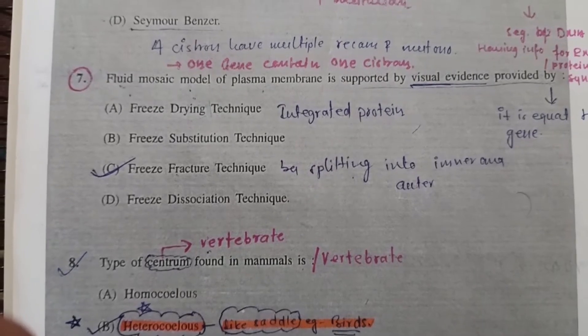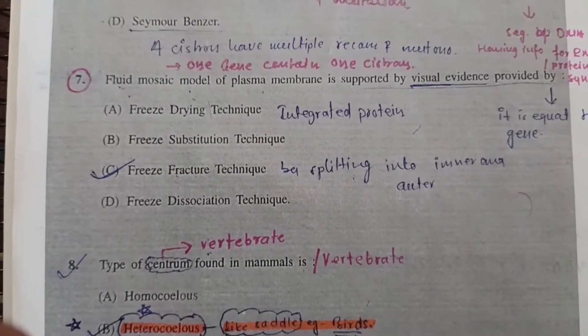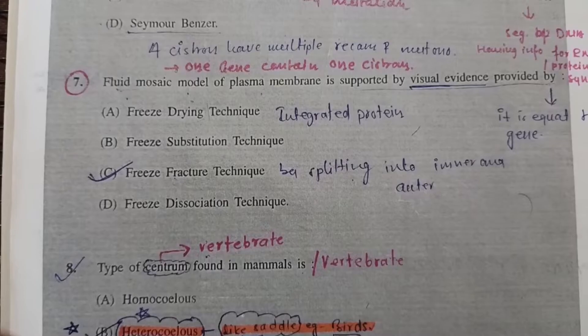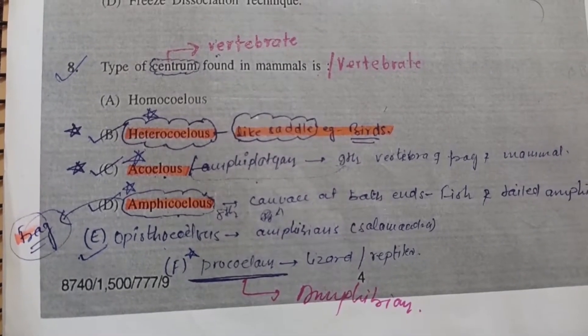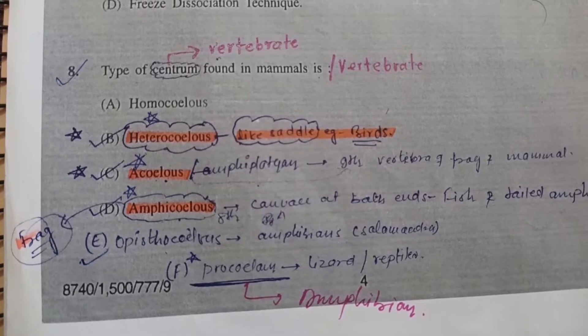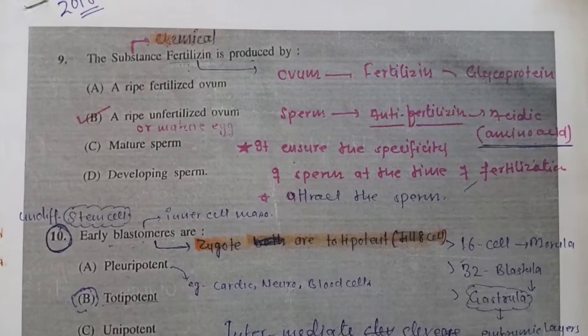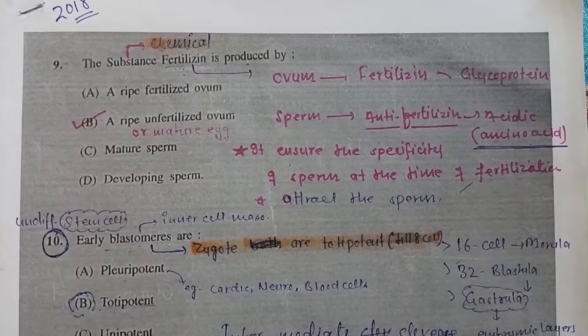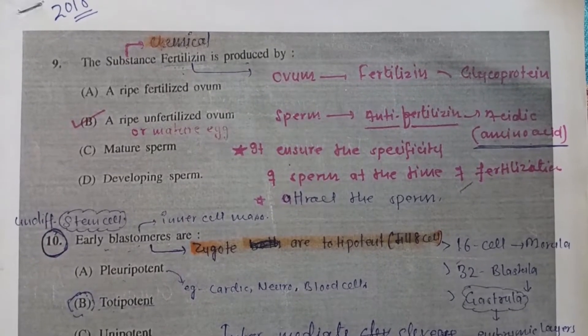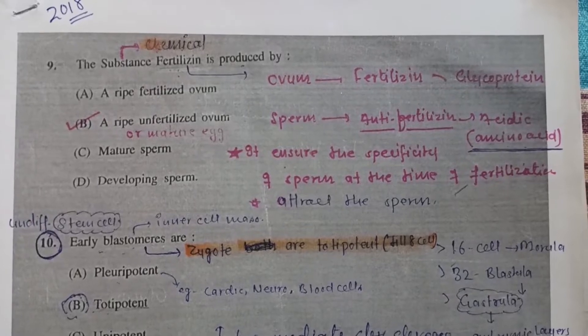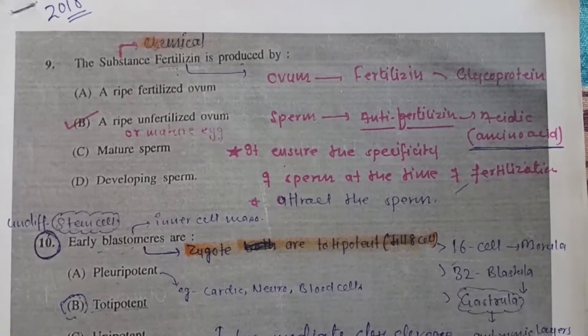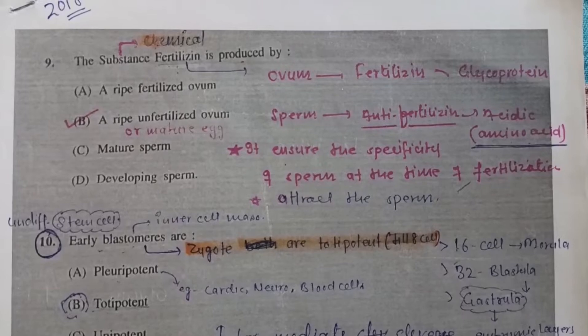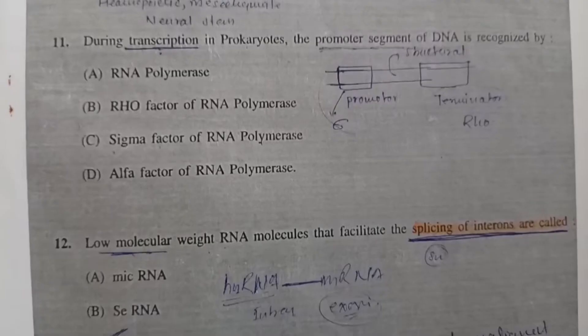Question 7: Fluid mosaic model of plasma membrane is supported by visual evidence provided by - Option C, freeze fracture technique, is correct. Question 8: Type of syndrome found in mammals is - Option C, Acellus, is correct. Question 9: The substance fertilizin is produced by - Basically fertilizin is a chemical substance produced by ovum, glycoproteinaceous in nature. Oppositely, sperm produces antifertilizin which is acidic. The correct answer is B, a ripe unfertilized ovum.